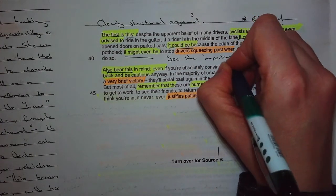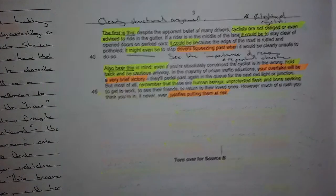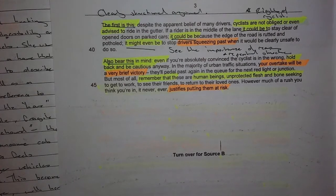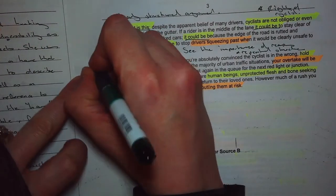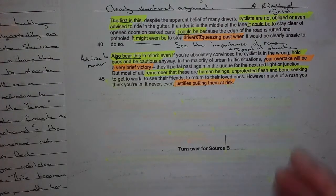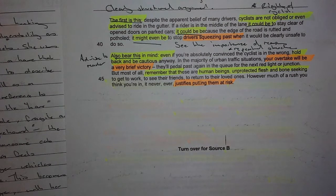We've got more rhetorical devices in these paragraphs to hammer home the rights of the cyclist. 'If a rider is in the middle of the lane, it could be to steer clear of open doors on parked cars. It could be because the edge of the road is rutted and potholed. It might even be to stop drivers squeezing past when it would be clearly unsafe to do so.' We have this rule of three — a repeated structure — to emphasise that there are many valid reasons why cyclists might be in the middle of the lane. Then: 'remember that these are human beings, unprotected flesh and bone' — some emotive language to emphasise the vulnerability of people.